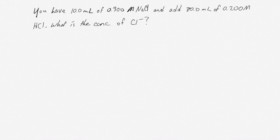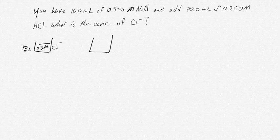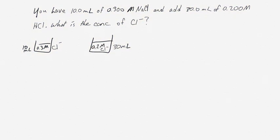Both of those compounds are strong electrolytes, so they split up 100% in solution, which means we know the concentration of chloride ions directly. We have 10 milliliters of 0.3 molar chloride ions — sodium chloride and chloride ions are in a one-to-one ratio and it's a strong electrolyte, so their concentrations are the same. For HCl, we have 0.2 molar HCl, which means 0.2 molar Cl⁻ ions, and we have 30 milliliters of that solution.